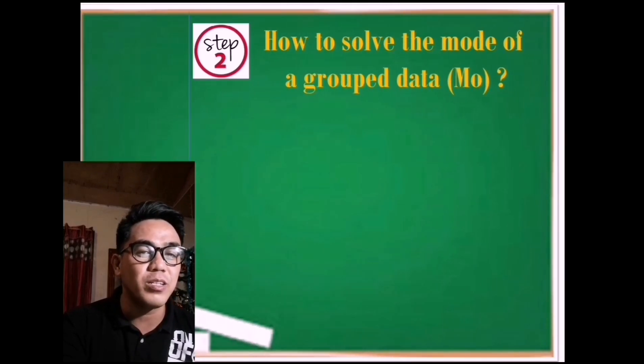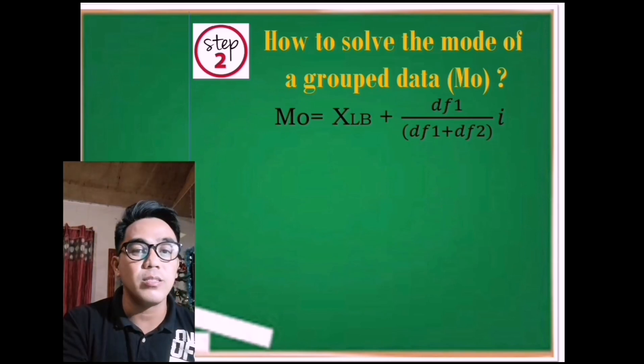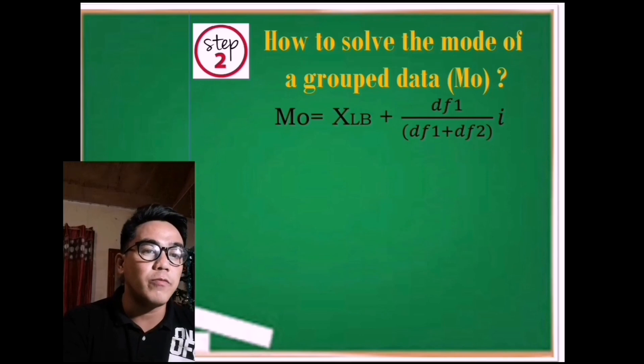Second, how to solve the mode of grouped data, which is denoted as capital M with a small o? Of course, we need the formula. And the formula is Mo equals XLB plus the quotient of df1 over the sum of df1 and df2 times i.